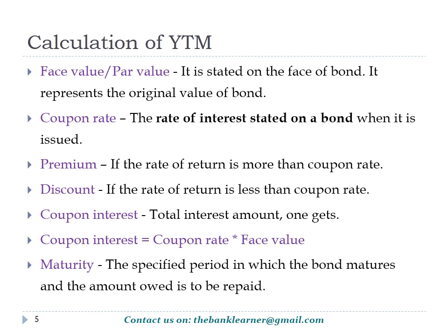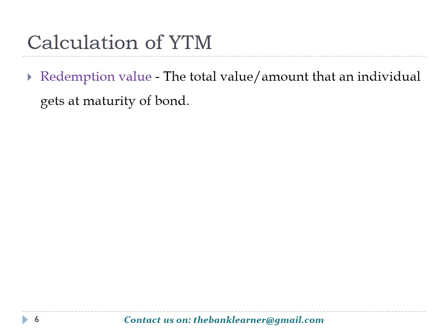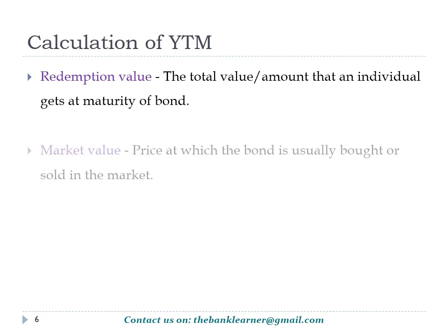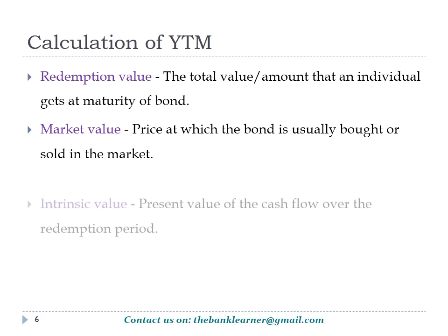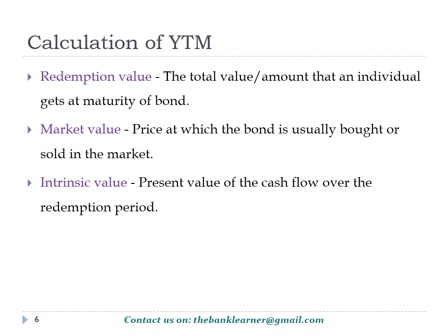Maturity is the specified period that the issuer has promised to repay the borrowed amount. Redemption value represents the value of the bond when it matures; a bond is generally issued at a discount and redeemed at par. Market value is the value of the bond in the current market scenario, which may be different from the par value or redemption value. Intrinsic value represents the present value of cash flows in the upcoming years until the bond matures.